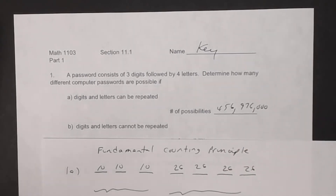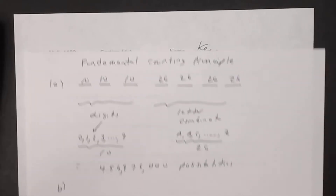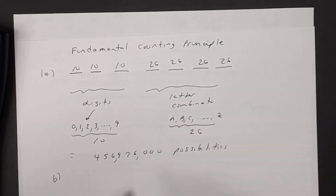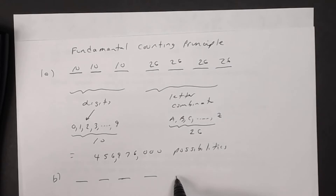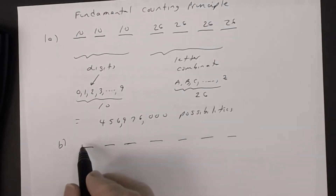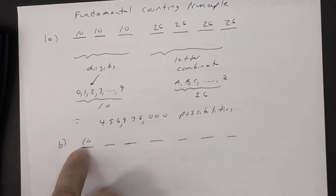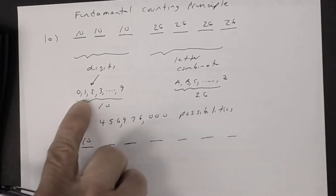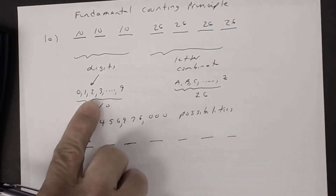In part B, digits and letters cannot be repeated. We have the same series: three digits followed by four letters. How many digits are possible for the first one? Ten. But if seven appears in the first position, you can't use seven again, so the number of possibilities decreases by one.